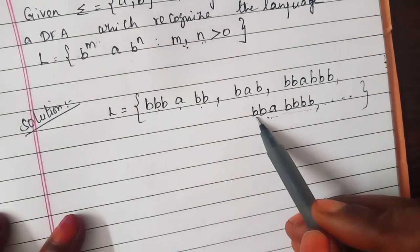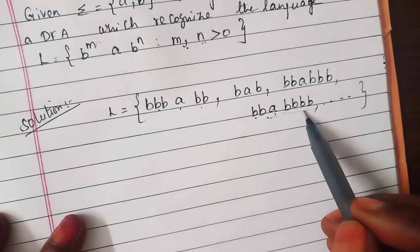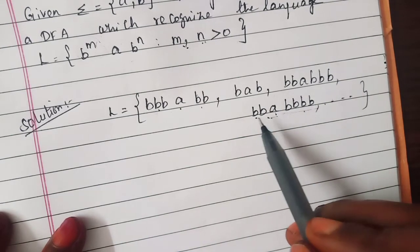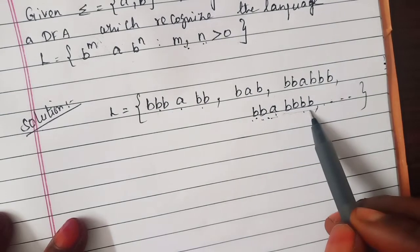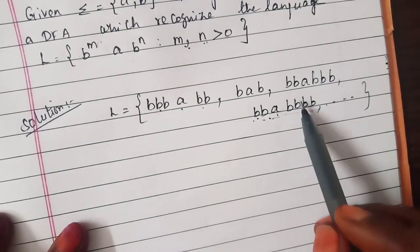So we will keep in mind b is followed by a and a is followed by b. It is any number of b's followed by a and followed by b's.